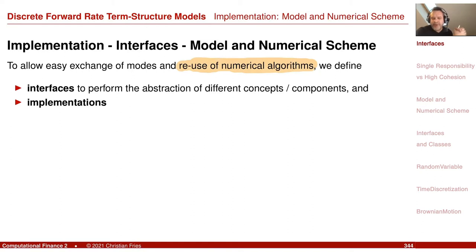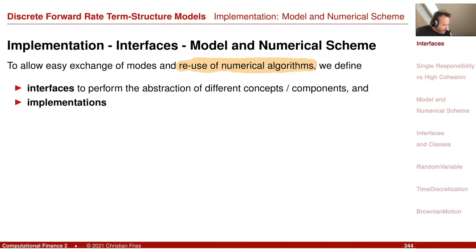Some of you remember that in the numerical methods lecture, we already had the Euler scheme for the Black-Scholes model for a stock, and we performed the Monte Carlo method. I would like to reuse a lot of that. I would also like to exchange model components. We saw that we have the log-normal model, the normal model, and the displaced log-normal model.